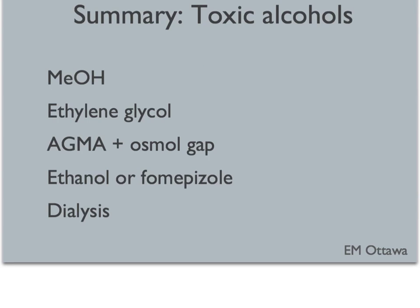In summary, methanol affects the eyes and the brain, while ethylene glycol affects the kidneys. The parent compound causes an increased osmol gap, while the toxic metabolites cause an anion gap metabolic acidosis. To treat toxic alcohol ingestion, we block the enzyme using ethanol or fomepizole, and toxic metabolites are removed by hemodialysis. We hope you enjoyed this toxicology segment. Thank you for watching.